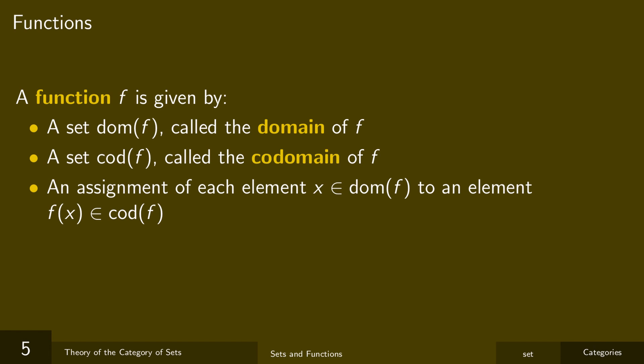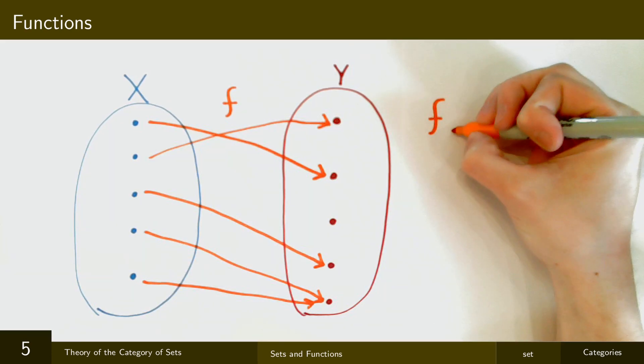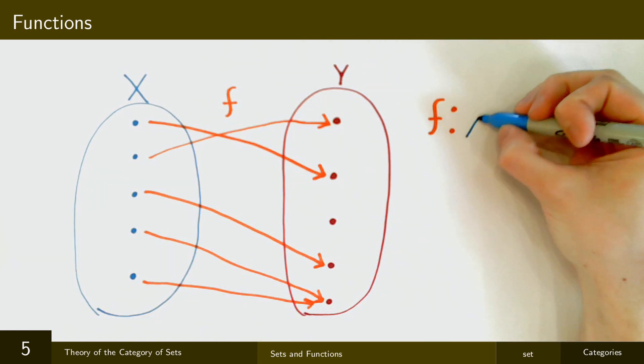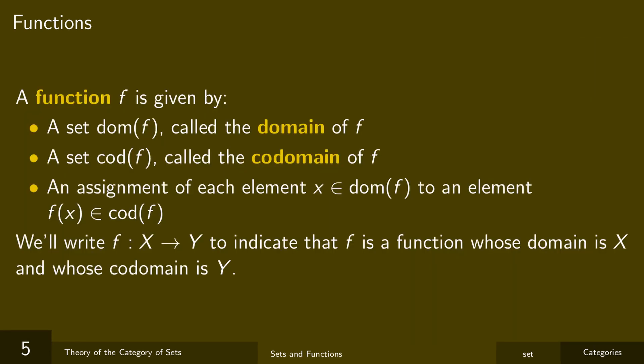Now, I said a minute ago that in set theory, you have to build everything out of sets, and that includes functions too. And so there's a standard way in set theory to represent functions as certain sets. But I'm not going to bother with that. We're just going to take functions as primitive. And so we have a nicer notation to indicate what the domain and codomain of a given function are. So we'll write f: X → Y to indicate that f is a function, and its domain is X, and its codomain is Y, where X and Y, of course, are sets.